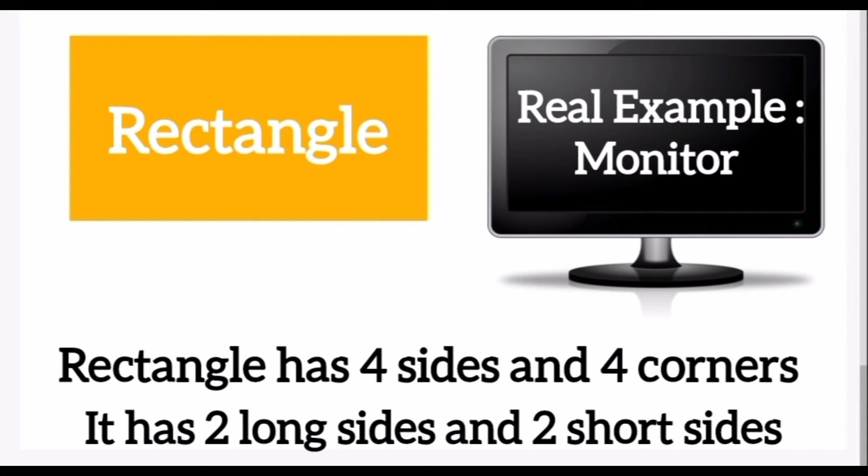Rectangle: a rectangle has four sides and four corners. It has two long sides and two short sides. A real example of a rectangle is a monitor.